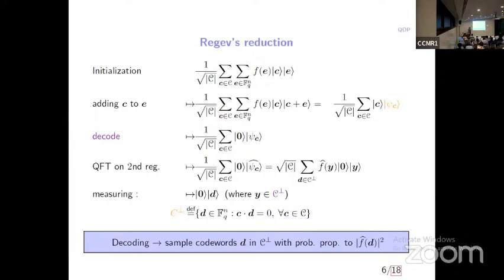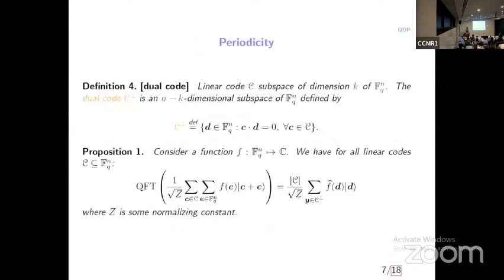The only known reduction goes through this quantum reduction. Suppose you have an algorithm for solving the classical decoding problem. You first set up a superposition over all possible codewords and all possible errors you are interested in decoding. Then you add this register to get the combined state. If you can solve the classical decoding problem — meaning if you know C plus E you can find C — then you can subtract C and get zero here.